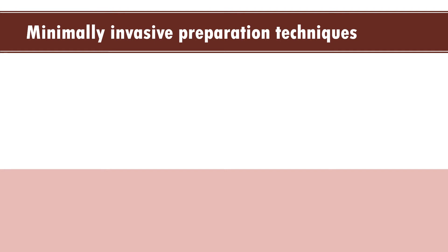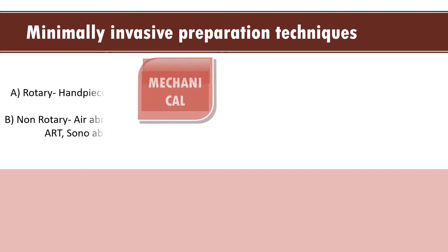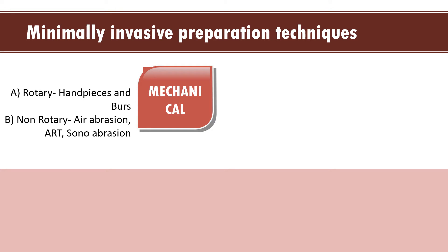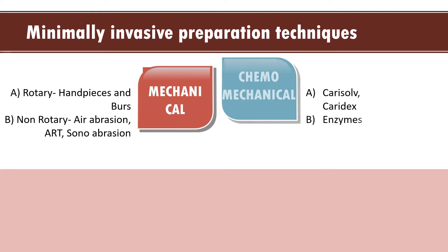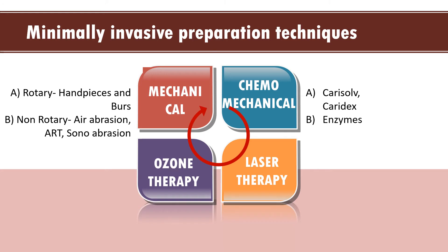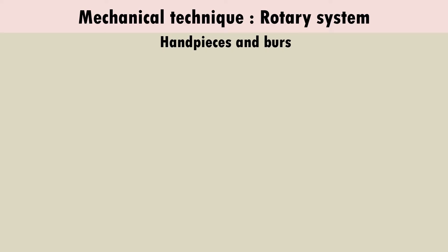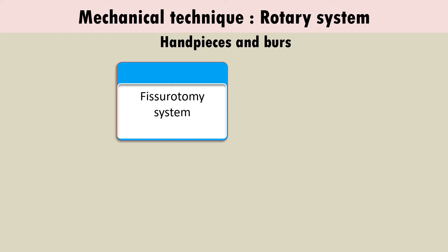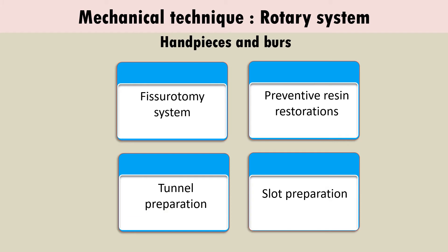Under MID we have covered definition, principles, and classification. The next step is the different minimal invasive preparation techniques, classified as: mechanical — rotary (handpieces and burs) and non-rotary (air abrasion, ART, sonoabrasion); chemical-mechanical using chemicals like Carisolv or Caridex or enzymes; laser therapy; and ozone therapy. Under rotary systems we discuss fissurotomy, preventive resin restorations, tunnel preparation, and slot preparation.